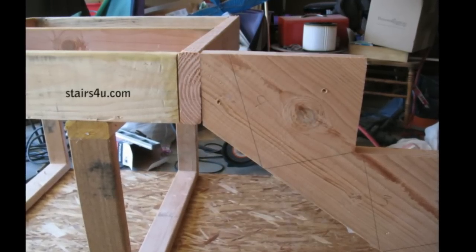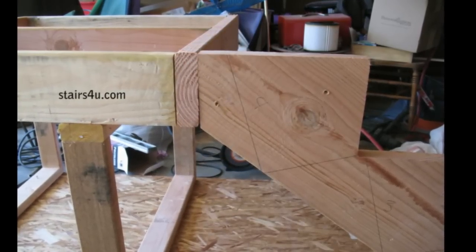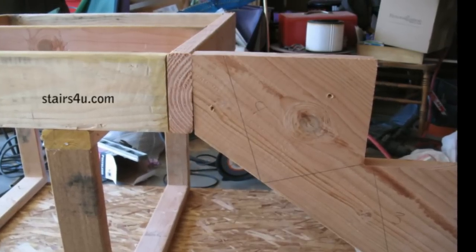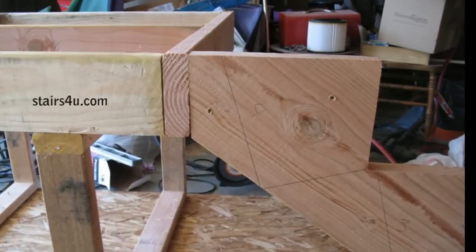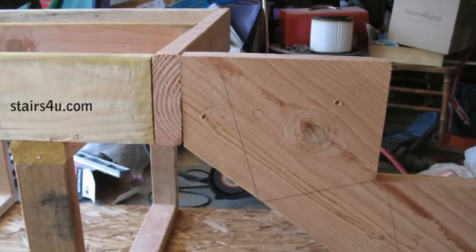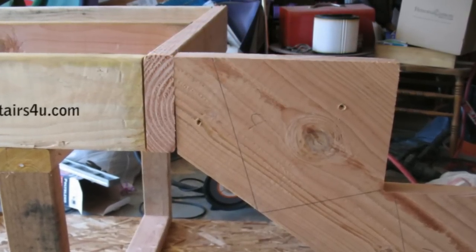Would it be better to actually nail the stringer to some type of a rim joist like this photograph we're looking at here? Or would it be better to nail it alongside of another joist? And again, like I said, I really don't have the answer to that.